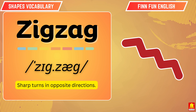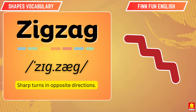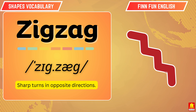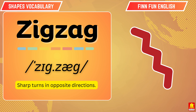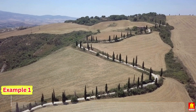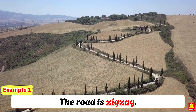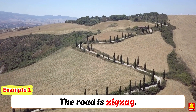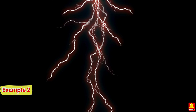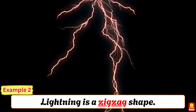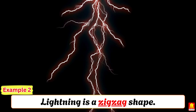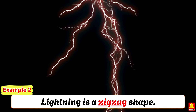Zigzag. The road is zigzag. Lightning is a zigzag shape.